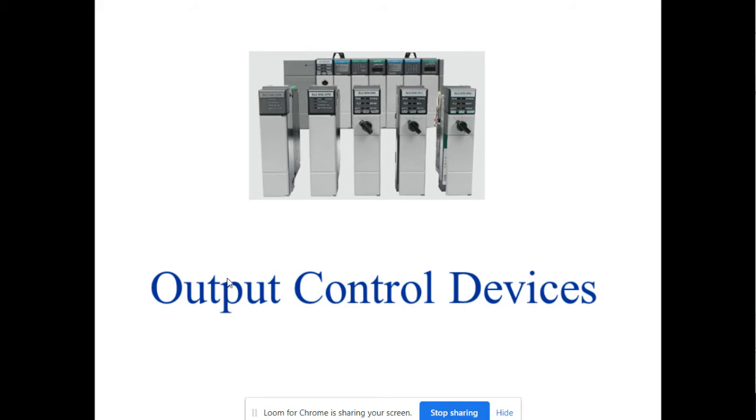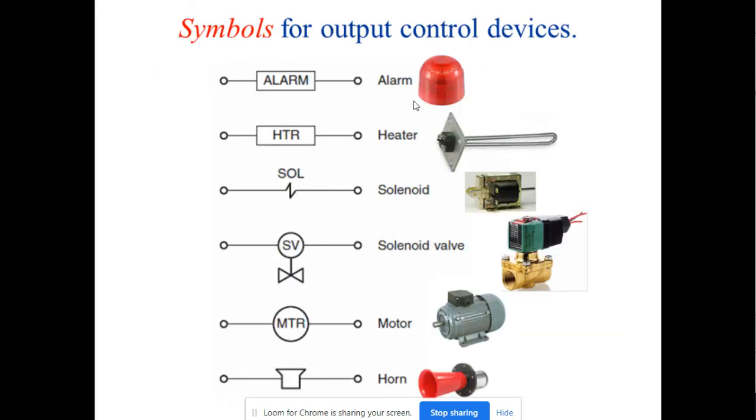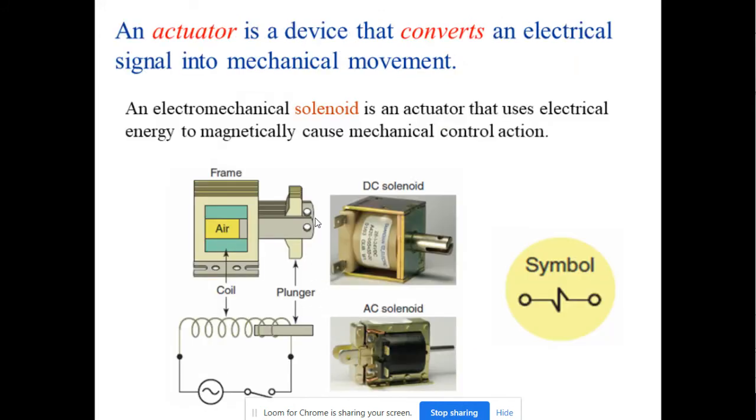Last one is the output control device which I have explained in Chapter 1. I guess I have shown you a few types of output control devices. This is the most commonly used like we have lights like we use in our lab. We have control relay. We have motor starter and also we have motor overload relay contact. We have alarm, heater, solenoid, solenoid valve, valve, motor, horn, etc.